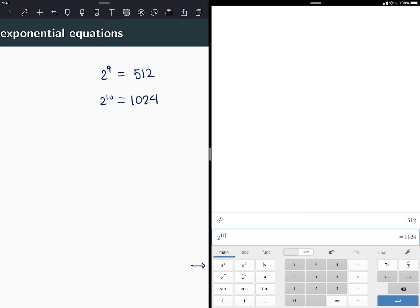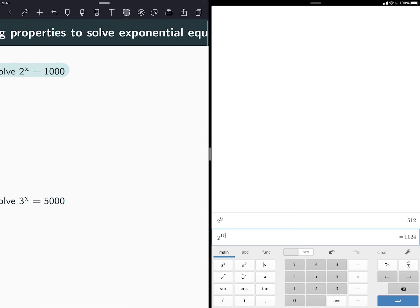So I know the answer is between 9 and 10 and closer to 10 than to 9. So it's going to be 10 points something. It's going to be a decimal. But how am I going to solve it?